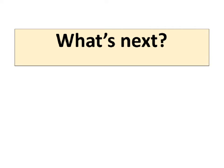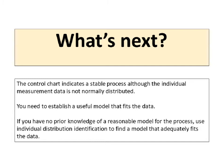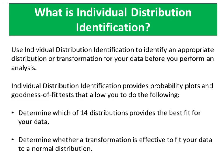The control chart indicates a stable process, although the individual measurement data is not normally distributed. You need to establish a useful model that fits the data. If you have no prior knowledge of a reasonable model for the process, use individual distribution identification to find a model that adequately fits the data. Individual distribution identification provides probability plots and goodness-of-fit tests that allow you to determine which of 14 distributions provides the best fit, or whether a transformation is effective to fit your data to a normal distribution.